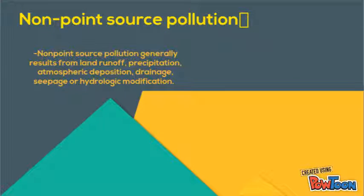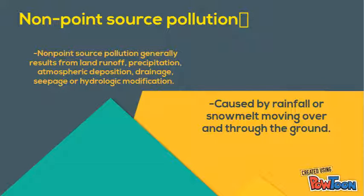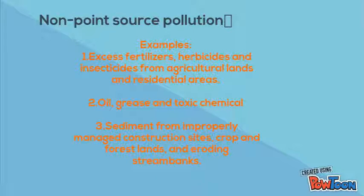Non-point source pollution is generally the result from land runoff, precipitation, atmospheric deposition, drainage, seepage or hydrologic modification. It is caused by rainfall or snowmelt moving over and through the ground. For example: excess fertilizer, herbicide and insecticide from agricultural land and residential areas; oil, grease and toxic chemicals; and sediment from improperly managed construction sites, crop and forest land, and eroding stream banks.